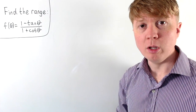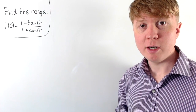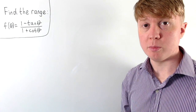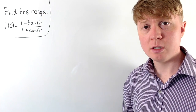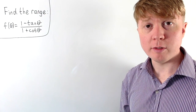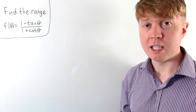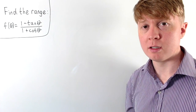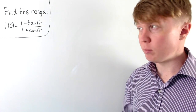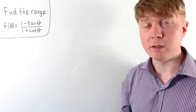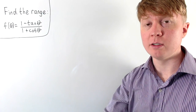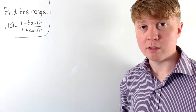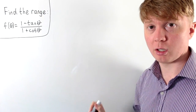We're going to solve this problem where we need to find the range of this function — the set of all possible outputs. We'll start by focusing on the values of theta, the inputs for which this function is going to be well defined, because for example tan theta isn't actually well defined for all values of theta. So we need to first work out which values of theta we can put into this function.